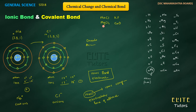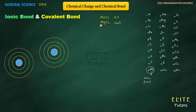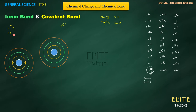Now let's look at magnesium chloride (MgCl2). There are two elements: magnesium and chlorine. Magnesium has atomic number 12 and chlorine has atomic number 17. The electronic configuration of magnesium is: first shell 2, second shell 8, third shell 2 — giving 2, 8, 2. Chlorine's configuration remains 2, 8, 7.